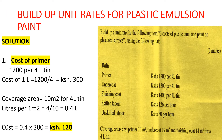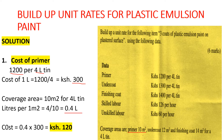We start with the cost of the primer. The primer costs 1,200 per 4-liter tin, so one liter costs 1,200 divided by 4, which gives us 300 shillings. The primer covers 10 m² for the 4-liter tin, so for one m² we need 4 over 10, which is 0.4 liters. The cost of the primer per m² is 0.4 liters times 300 shillings per liter, giving us 120 shillings.